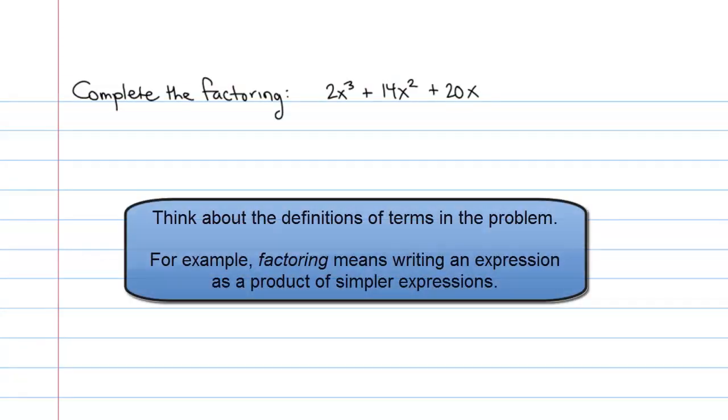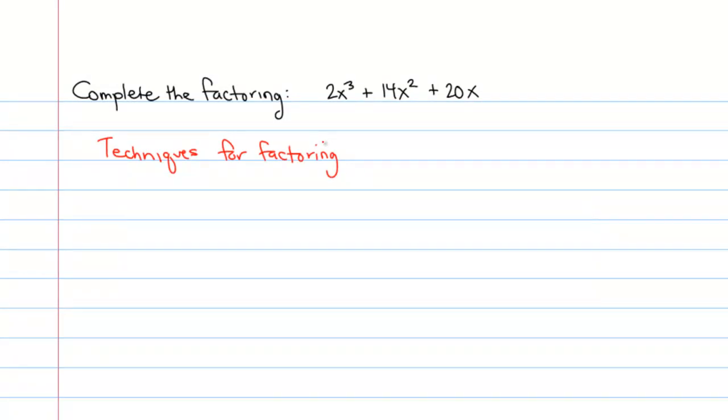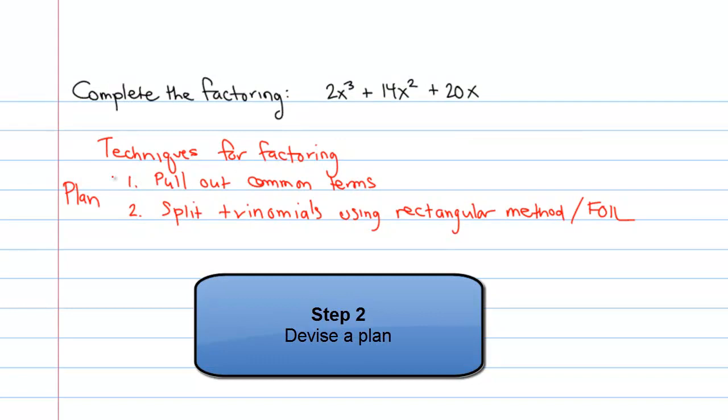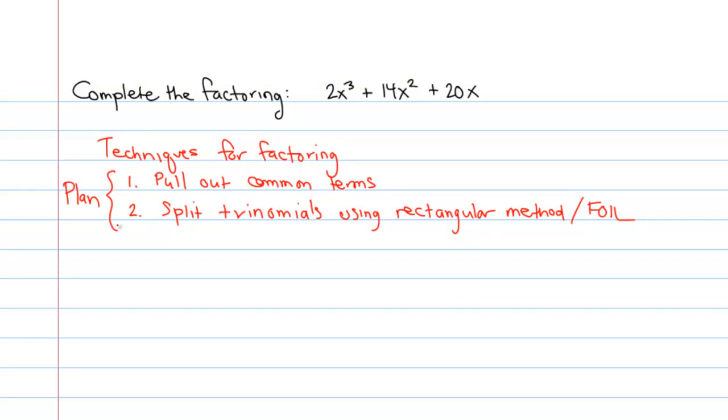Now I know that to factor something is to write it as a product of simpler pieces. The two most common techniques for factoring are to pull out common terms and to split trinomials, which are polynomials with three terms using the rectangular method or FOIL. So these two techniques are going to form my plan of attack. We'll factor out as much common terms as we can, and then since we have three pieces left over, we'll attempt to split the remaining trinomial.